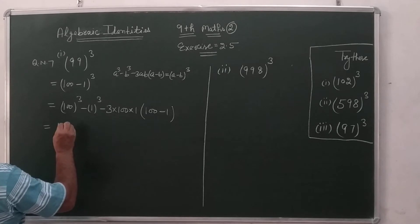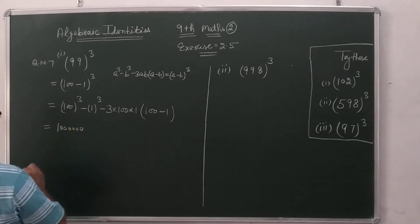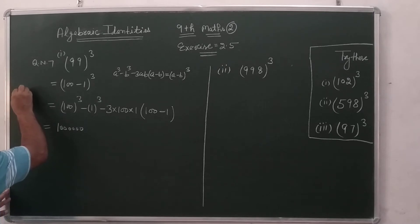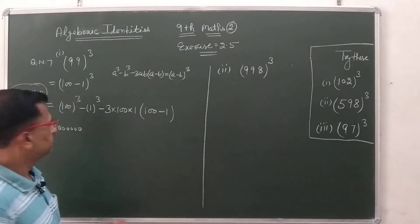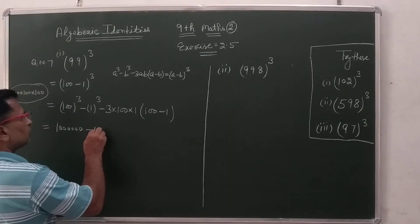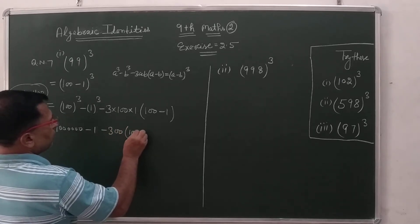100 into 100 into 100, 1 ke piche 6, 0. As 100 into 100 into 100, it is the cube of 100. 1, 2, 3, 4, 5, 6. Minus 300 into 100 minus 1.